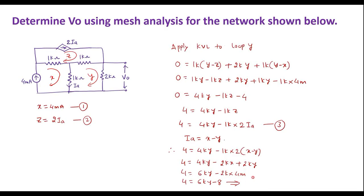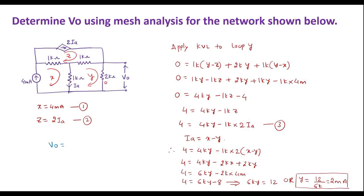Simplifying further: 6K·Y equals 12, so Y equals 12 divided by 6K, which equals 2 milliamps. Now VO is the voltage across the 2 kilo ohm resistor, so VO equals 2K × Y equals 2K × 2 milliamps. The kilo and milli cancel, giving VO equals 4 volts. So the voltage across the 2 kilo ohm resistor is 4 volts.